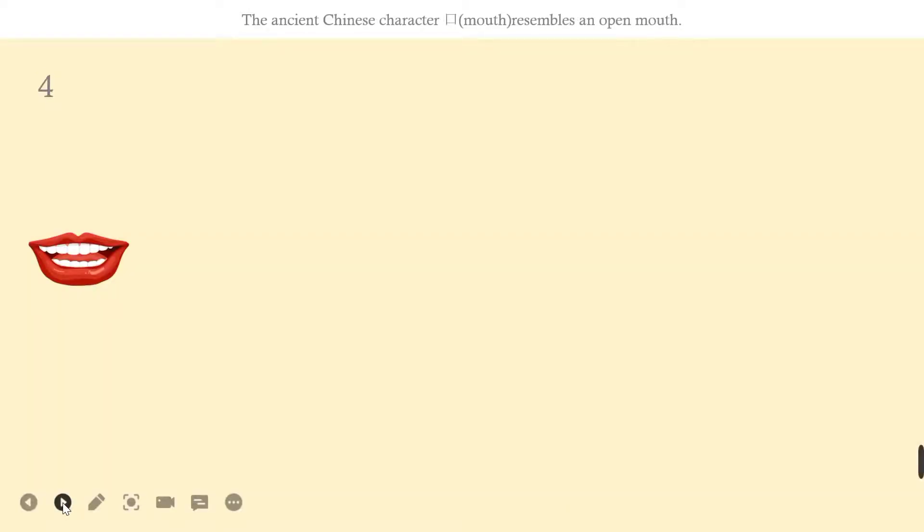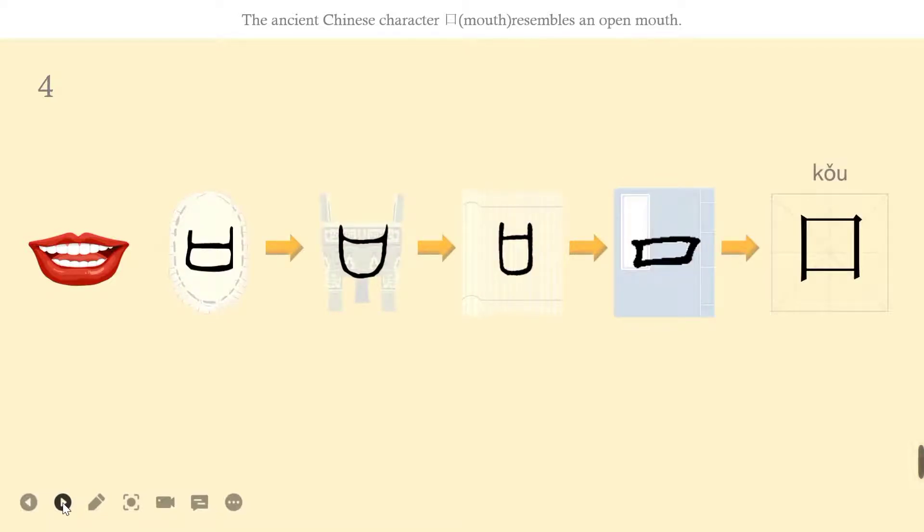Let's learn the fourth character, kǒu. It's quite easy to guess the meaning of kǒu. The ancient character kǒu resembles an open mouth. It's quite vivid.